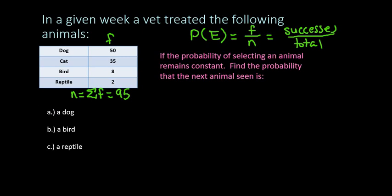So the first thing that we want to find is the probability that we have a dog as the next patient. You can either name this with a capital letter, sometimes they do that, but I'm just going to say the probability of a dog being seen. So what we would do, a success would be there was 50 dogs seen during the week out of 95 total.